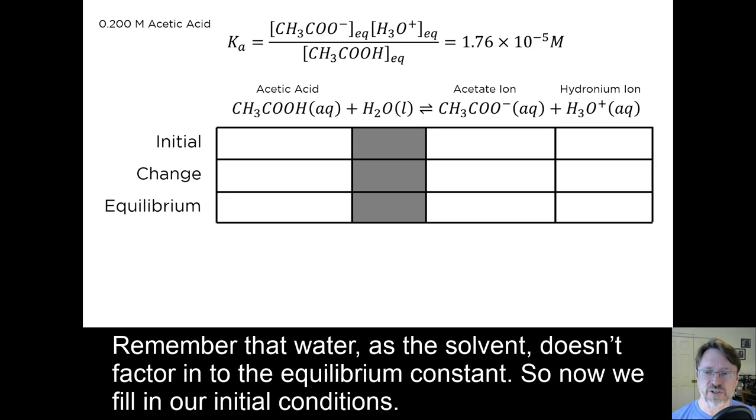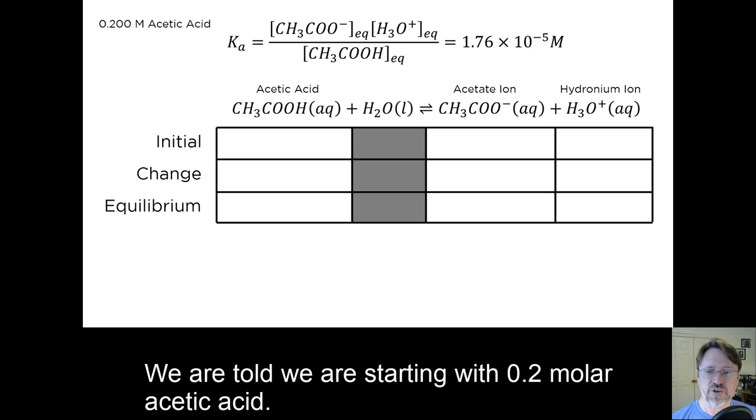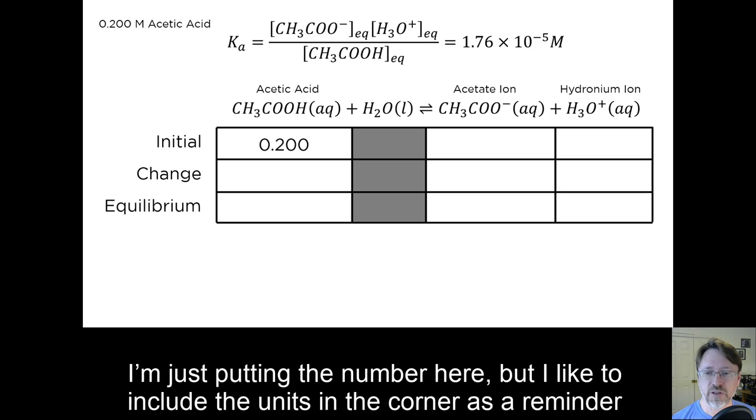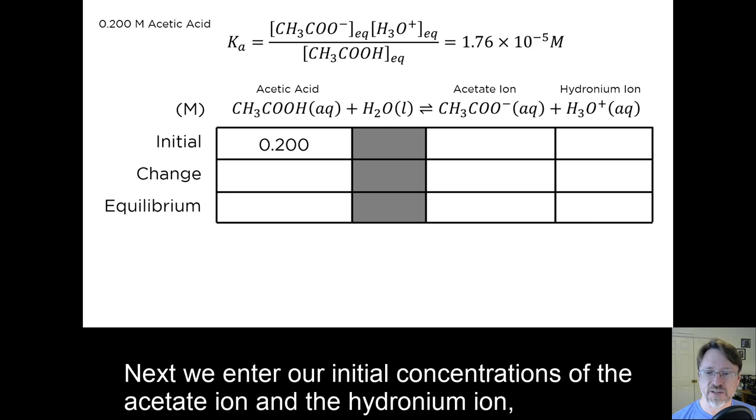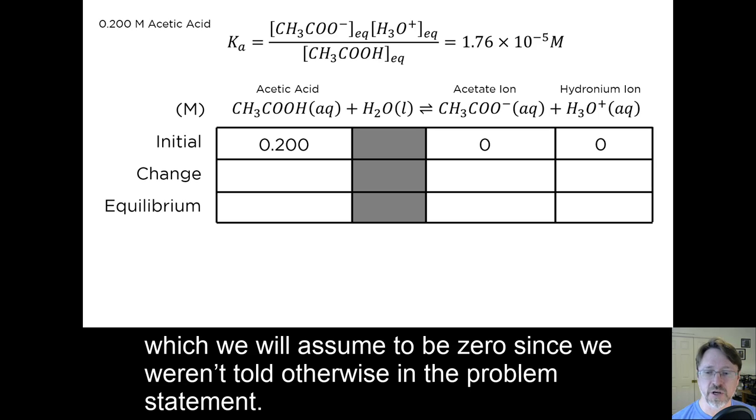So now we fill in our initial conditions. We are told we are starting with 0.2 molar acetic acid. I'm just putting the number here, but I like to include the units in the corner as a reminder that all of our entries in the table will be in molarity. Next, we enter our initial concentrations of the acetate ion and the hydronium ion, which we will assume to be 0 since we weren't told otherwise in the problem statement.